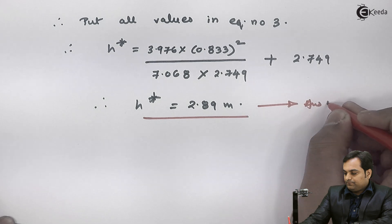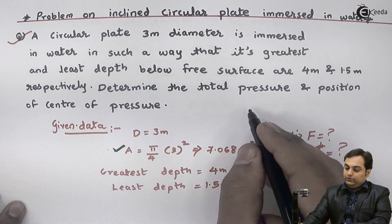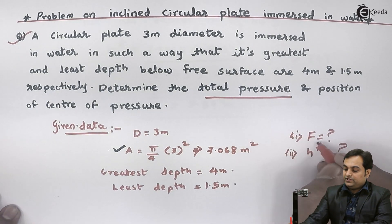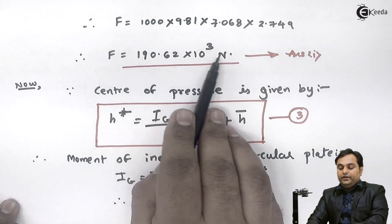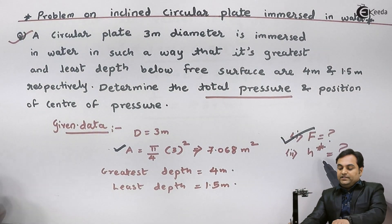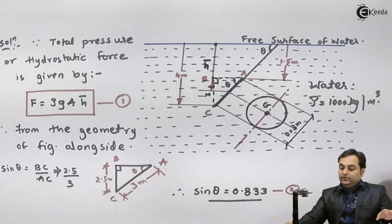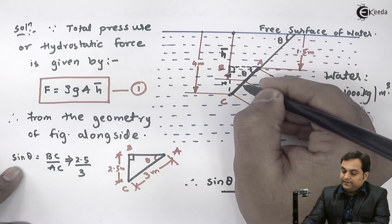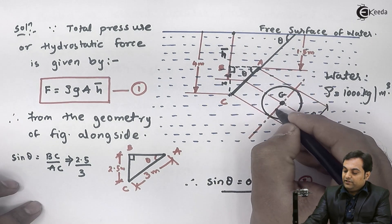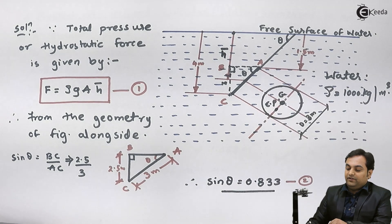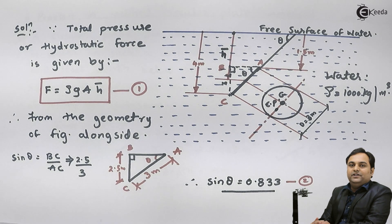In summary, this problem had two parts. First, total pressure (hydrostatic force) = 190.62 × 10³ Newton. Second, H* = 2.89 meter, meaning the hydrostatic force acts at a depth of 2.89 meter from the free surface — just below the centroid depth H̄ = 2.749 meter. This video demonstrated how to calculate total pressure and center of pressure for an inclined circular plate immersed in water.